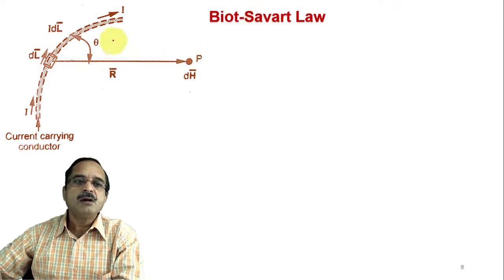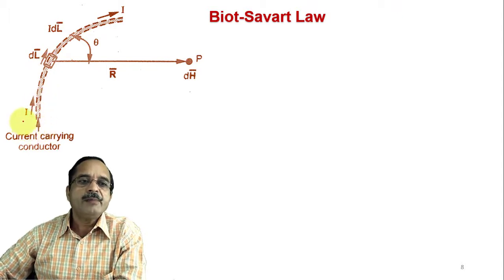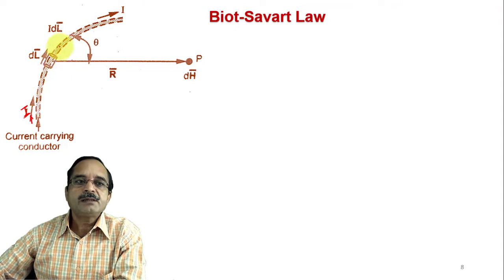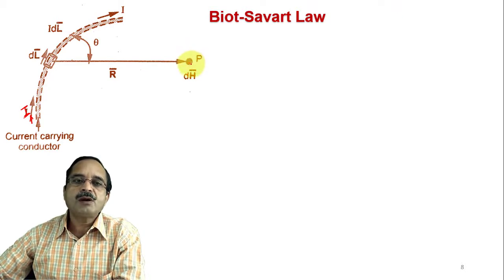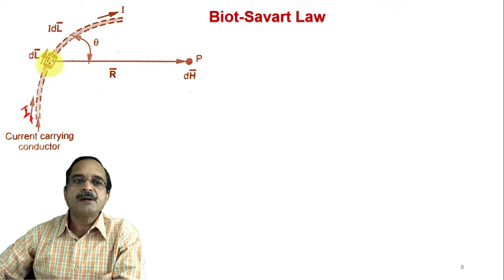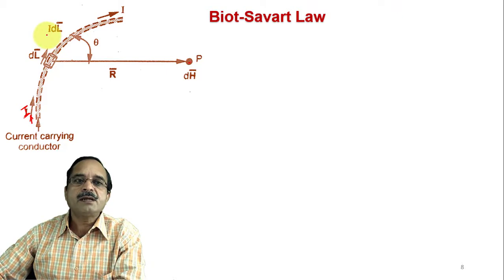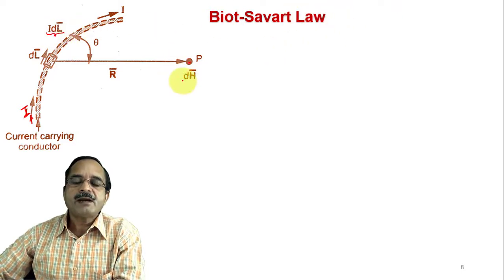Now let us come to Biot-Savart law. We have a current-carrying element where current i is flowing. Because of this current, some magnetic field is produced, and there will be some magnetic field intensity at point P. Using Biot-Savart law, we find the expression for H at point P. For simplicity, we assume a differential element — a small differential length dl — so that i·dl is called the differential current element.